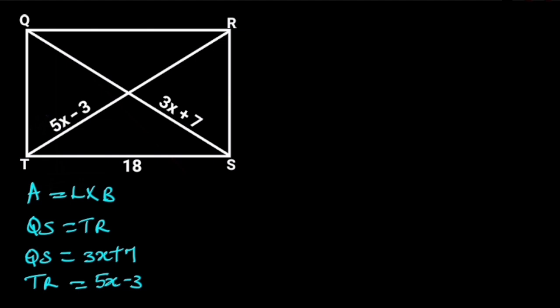If we go ahead and equate these two equations, it follows that 3x plus 7 is equal to 5x minus 3. Collecting like terms will give us 5x minus 3x is equal to 7 plus 3.